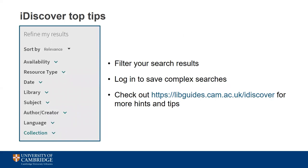Here are some top tips to make the best use of iDiscover. First, always use the filter options when searching — you can filter by all sorts of areas, such as books within a specific date range on a particular subject. Second, if you're carrying out lots of complex searches or an ongoing literature review, you can save searches to your account and repeat them with a click of a button — just remember to be logged in with your Raven password. Finally, colleagues from across the libraries have made great online guidance with how-to videos and step-by-step screenshots, so check out the LibGuides for more information.